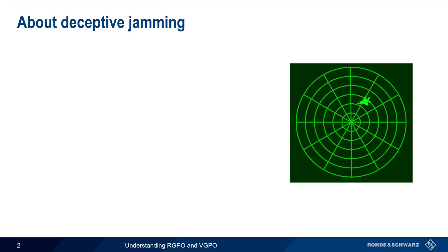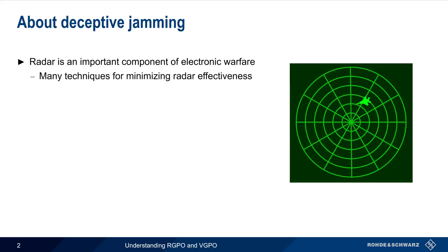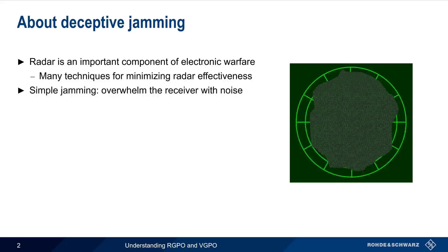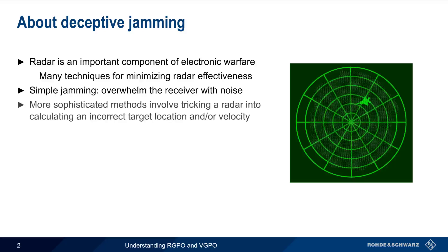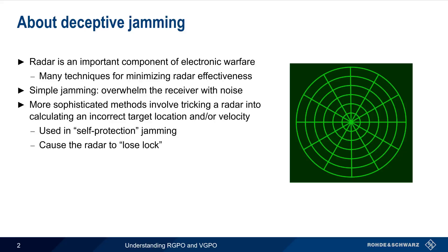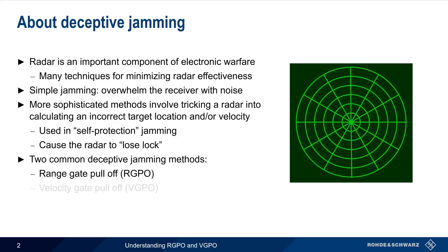Let's start by talking about radar. Radar is one of the most important components of EW, or electronic warfare, and there are many techniques that can be used to minimize the effectiveness of an adversary's radar. The most basic jamming methods simply involve generating noise that overwhelms the radar receiver and keeps it from being able to detect radar returns or echoes. More sophisticated methods involve tricking a radar into calculating an incorrect target location and or velocity. This type of deceptive jamming is primarily used for self-protection — that is, the target is also the jammer. The goal of deceptive jamming is to force the radar to lose lock on the target and then have to restart the search and acquisition process. Two common deceptive jamming methods are Range Gate Pull-Off and Velocity Gate Pull-Off.